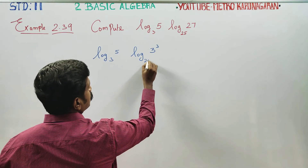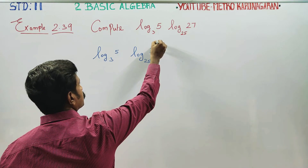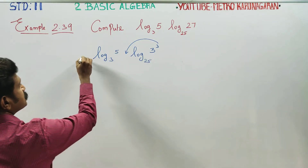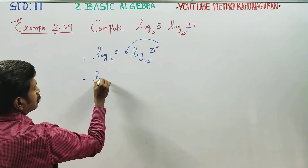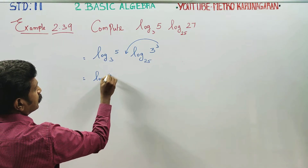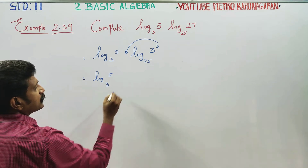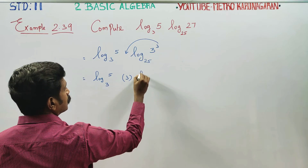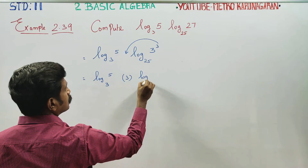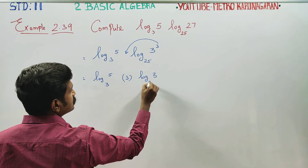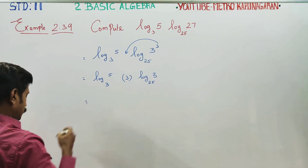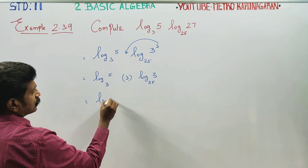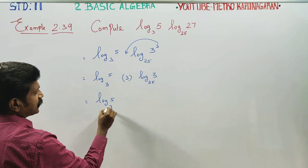Applying the power rule. The next stage is log 5 to the base 3, multiplied by 3 in front. Then log 3 to the base 25. The next stage is log 5 to the base 3.